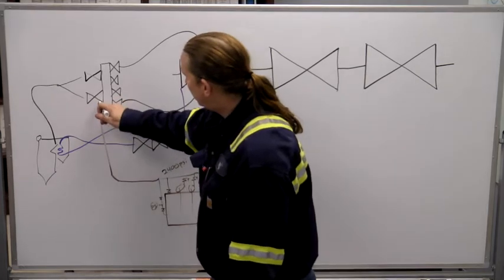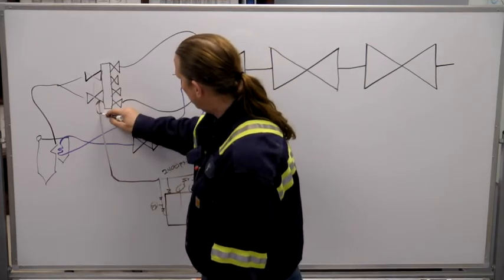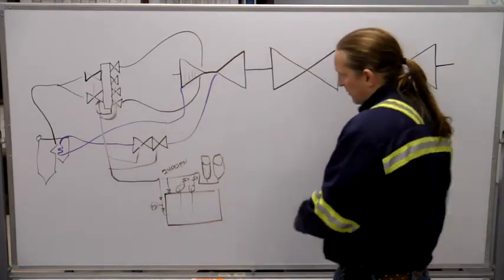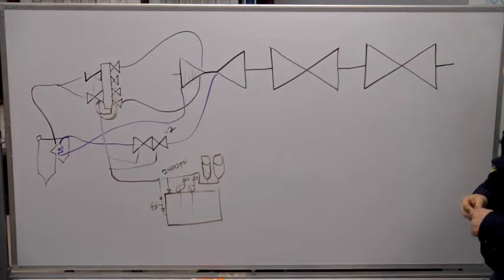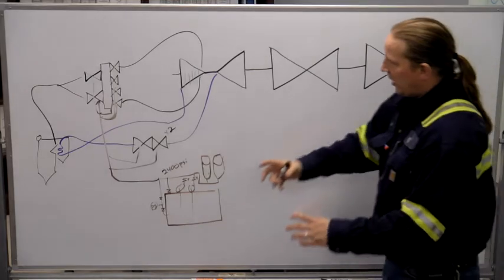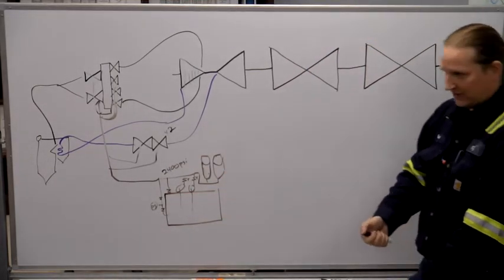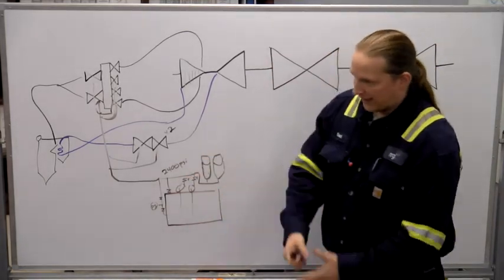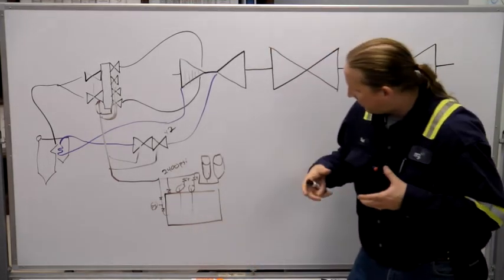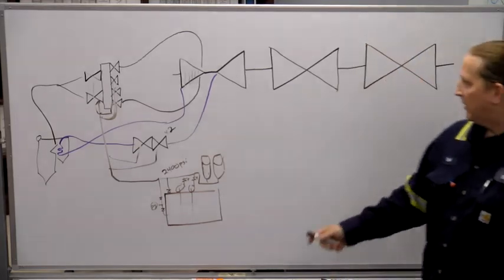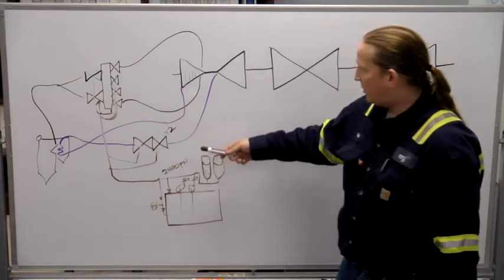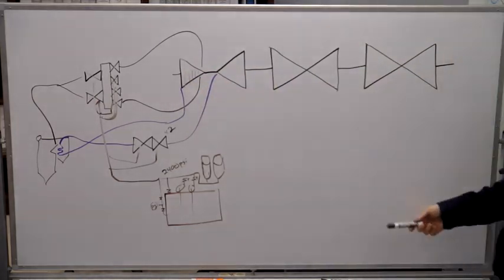The pumps provide oil to the main steam stop valves, the control valves, and the intercept valves. The intercept valve is kind of two valves inside one body — a stop valve and a control valve in a concentric arrangement. If the stop valve is shut, it doesn't matter what the control valve is doing. If the stop valve is open, the control valve can throttle the steam. Practically speaking, these stay open all the time because pinching them back is just a loss of efficiency.